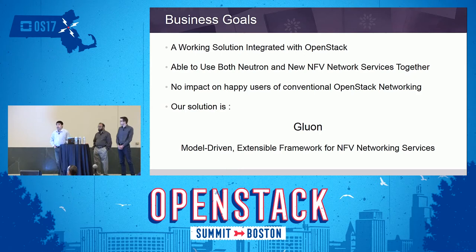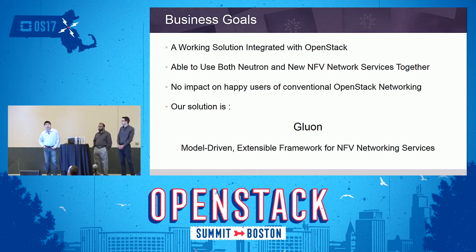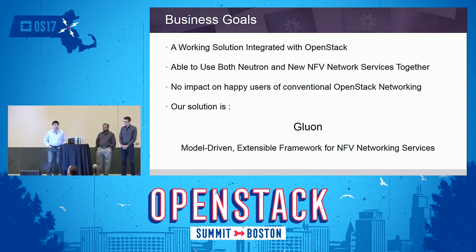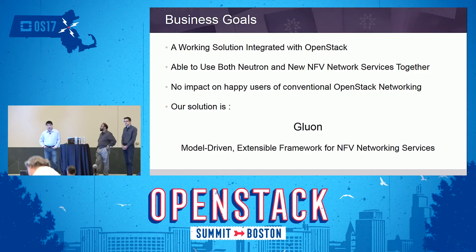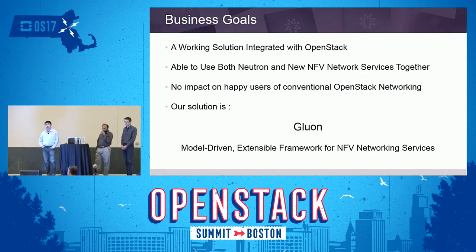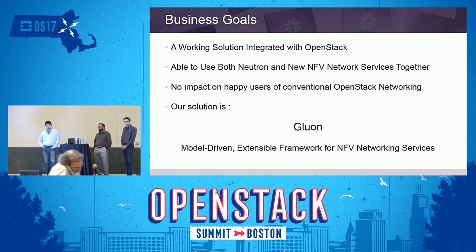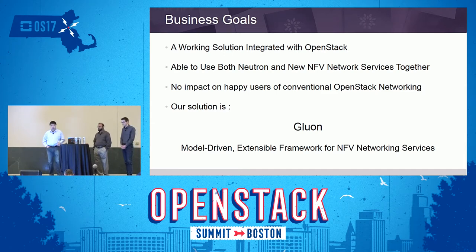The business goals include working solutions that need to be integrated with OpenStack, because OpenStack has many different deployments commercially in the market. We need to be able to use both Neutron and the new NFV networking service together, supporting heavy use of Neutron in traditional data centers while also serving new users in the NFV networking segment. The solution is called Gluon — a model-driven extensible framework for NFV networking services.